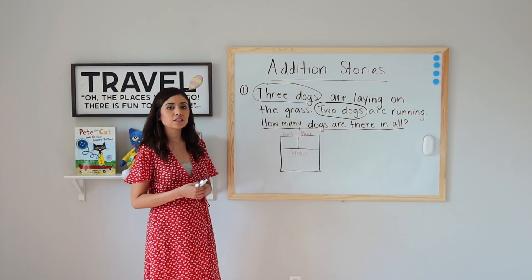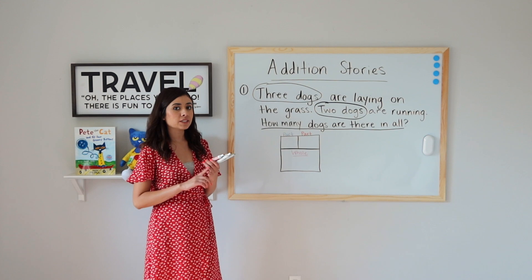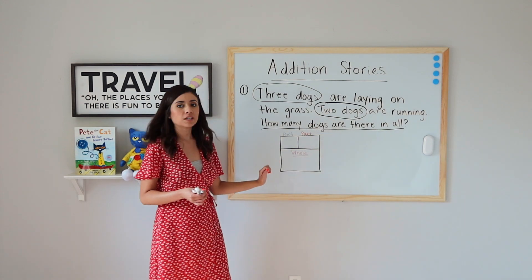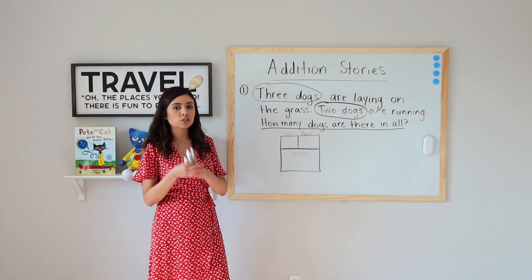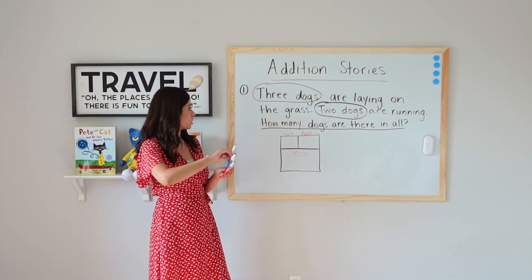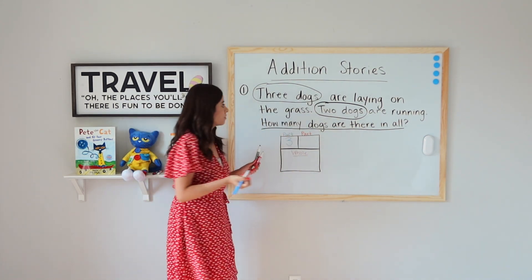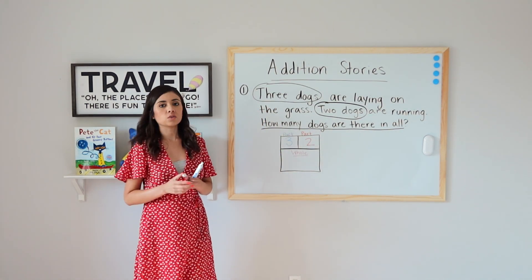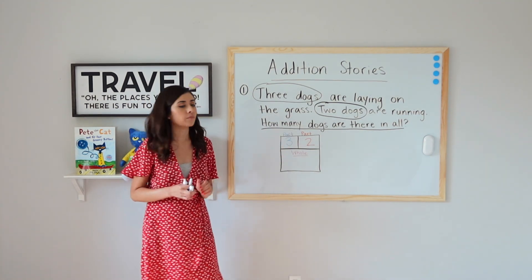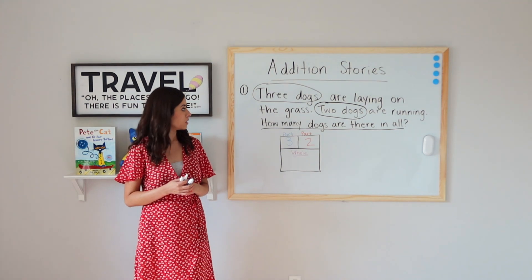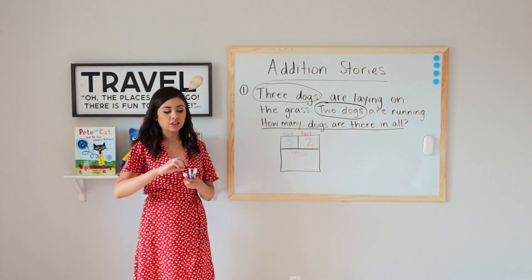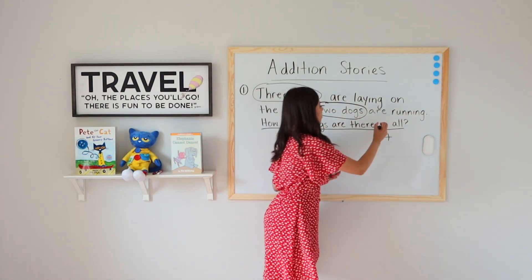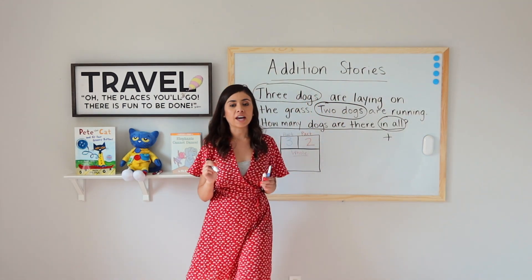In order to solve this problem, I need to figure out what operation I'm going to do. Am I going to add or am I going to subtract? I have two different parts. Let's go ahead and write those two different parts here — I'm going to use different colors to help me organize my information. I have three dogs and I have two dogs. Will I add or will I subtract? If you said add, you are correct. My question asks 'in all,' and when I see 'in all,' I know that I have to add.